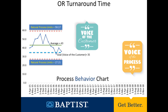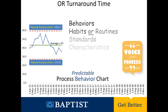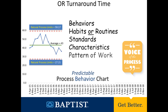The process behavior chart allows you to characterize the behavior of your process as being either predictable or unpredictable. When a process is predictable, like this one, the process behavior chart defines what you can expect in the future. The process average is likely to continue to be the same, and the future values may fall anywhere within those natural process limits — those red dashed lines defined by the chart. When a process is operated predictably, it is operating as consistently as possible. Within this process, we have behaviors, habits, or routines, standards or a lack of standards, and characteristics — we can ultimately call that the pattern of work.